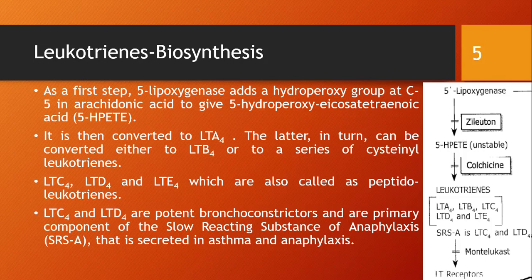5-HPETE is very unstable and is converted to LTA4. LTA4 in turn can be converted either to LTB4 or to a series of cysteinyl leukotrienes — LTC4, LTD4, and LTE4.